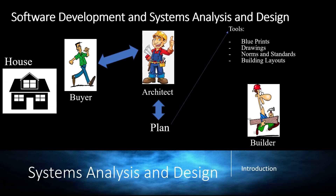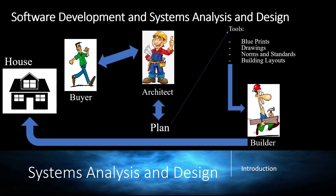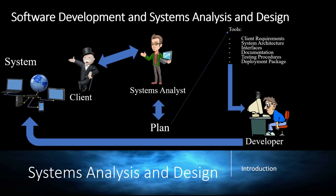For software development, it's basically the same thing. The house becomes the system, the buyer becomes the client, the architect becomes the system analyst, and the builder becomes the developer. The tools also change — in this case, they include client requirements, system architecture, interface documentation, testing procedures, and the deployment package.